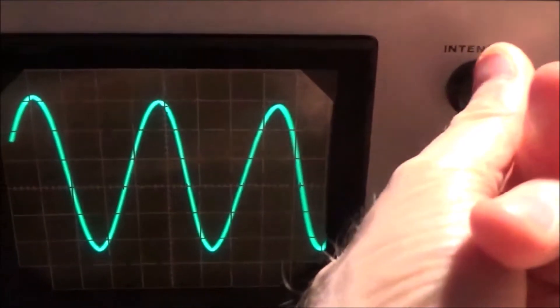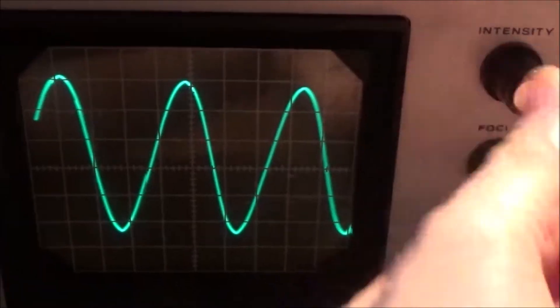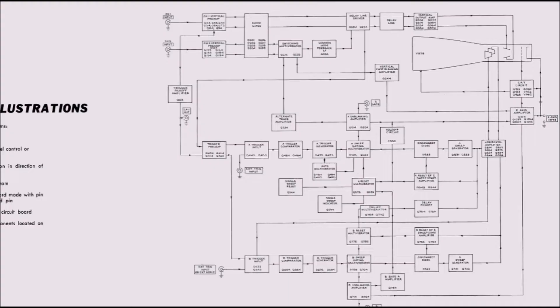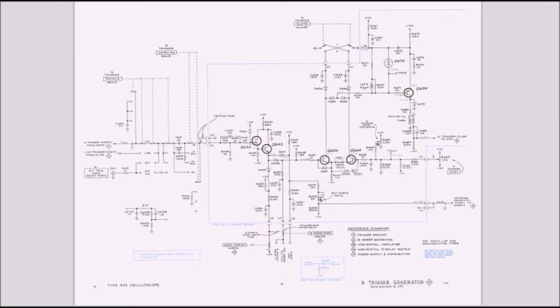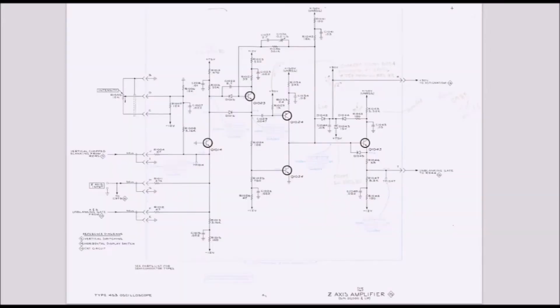It was intimidating as the Heathkit 4560 schematic is one page while the Tektronix 453 has 17 pages of schematics, block diagrams, and so on.